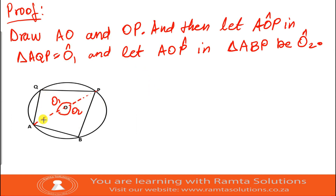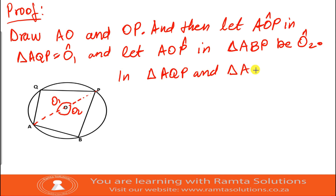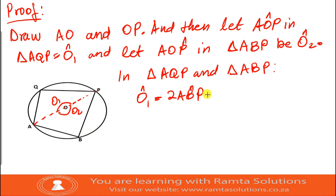When you look at triangle AQP and triangle ABP, angle O1 is equal to two times angle ABP. The reason: the angle at the centre is equal to two times the angle at the circumference.